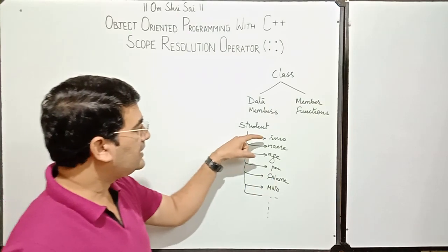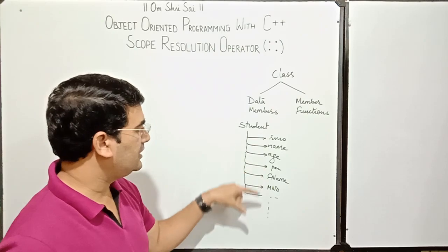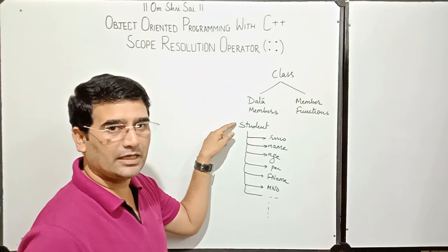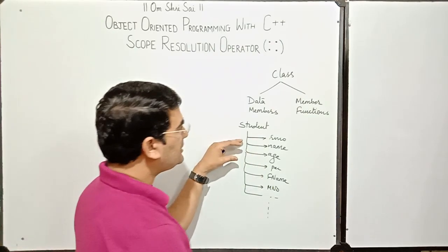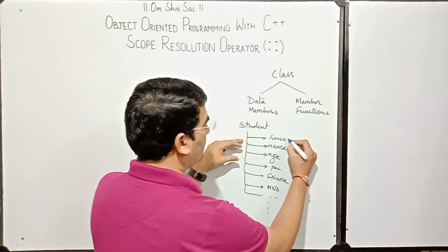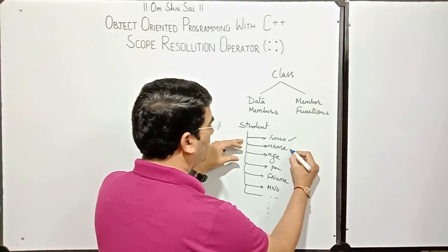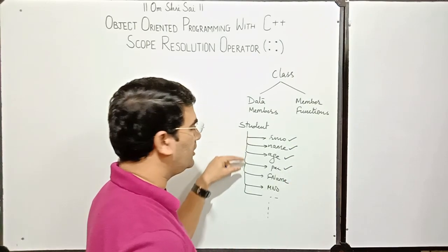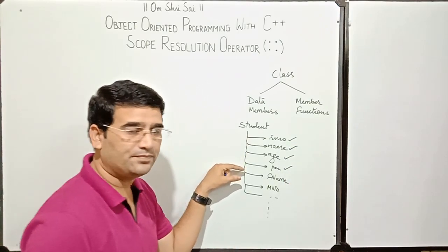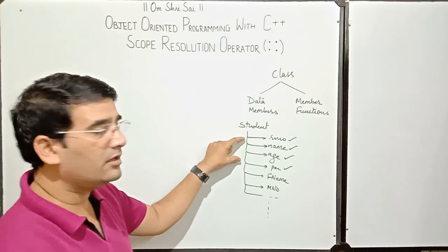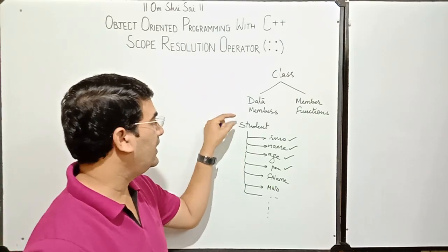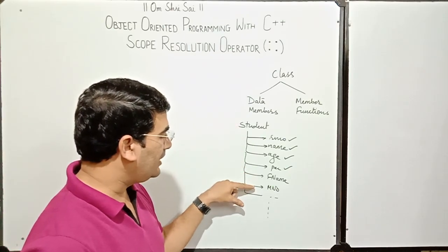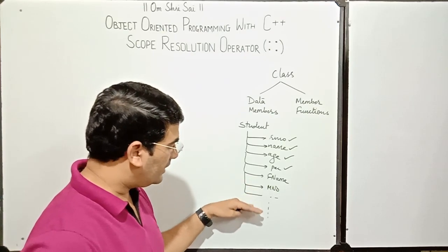All these are the properties or characteristics which characterize the student class. If we think that only role number, name, age, and percentage are the important properties that should be included while defining the class student, then father's name, mobile number, and other such properties are not that important.